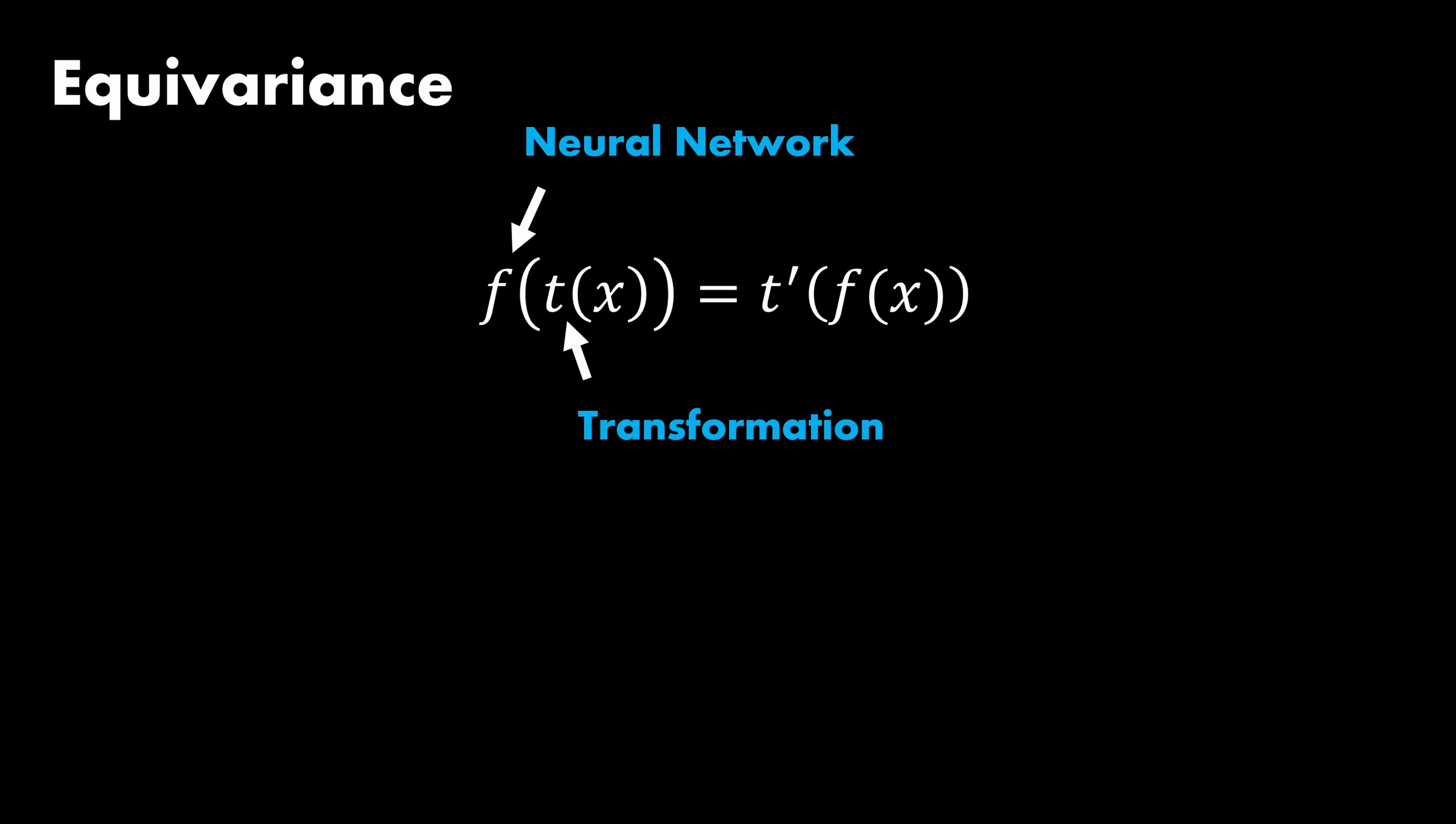It is also possible to define this more formally with very simple expressions. A function, in our case the model, is said to be equivariant when applying some transformation t, for example, translations on an image, on input x, which is the image, if the output of our model changes equivalently through some other transformation t prime. For invariance, on the other hand, the output stays unaffected.